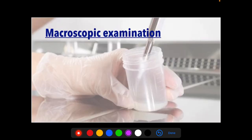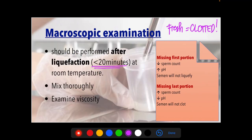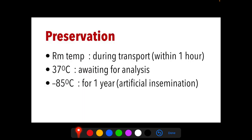For the macroscopic examination, a fresh semen sample is clotted, so the examination must be performed after liquefaction — approximately less than 20 minutes at room temperature. The semen sample must be mixed thoroughly and examined for viscosity. If the semen fails to liquefy, that indicates inadequate prostate secretion. The majority of sperms are found in the first portion of collected semen; if the first portion is missing, sperm count decreases, pH increases, and semen will not liquefy.